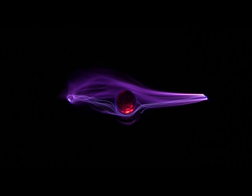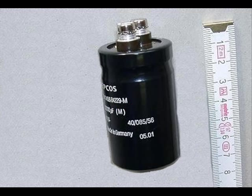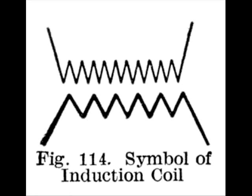The amount of electric charge that can be stored up in a body is called the capacity of that body. A condenser or capacitor is a device specifically intended to store up an electrical charge. Its capacity is determined mainly by the action of electrostatic induction. It consists essentially of two conducting surfaces, or plates, which are insulated from each other.